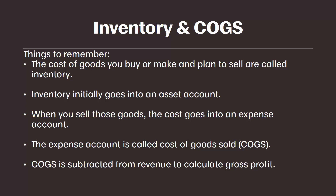COGS is subtracted from revenue to calculate gross profit. Make sure you remember those key points, and if you're struggling with any of these concepts, go back over this video. In the next video we're going to go through a similar example but for a long-term asset like a building, and look at how it moves from an asset account over time to an expense account.